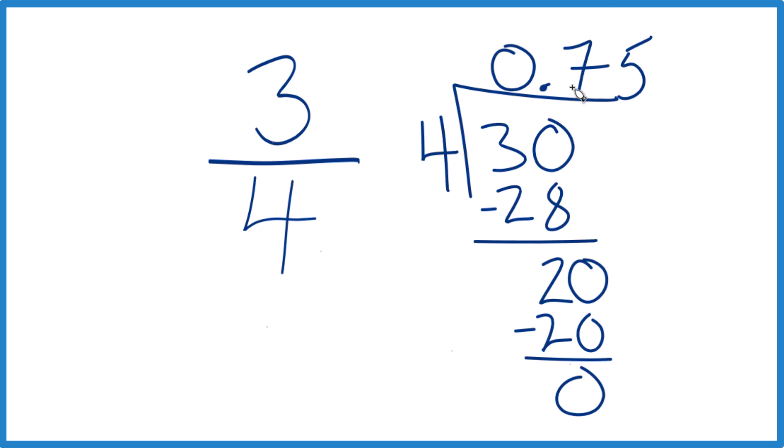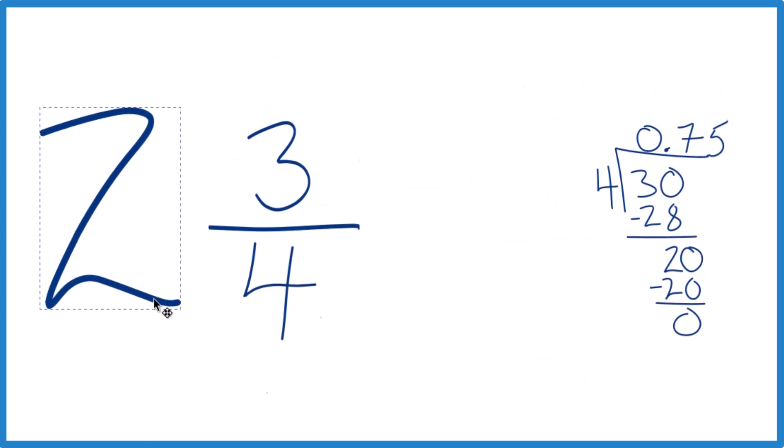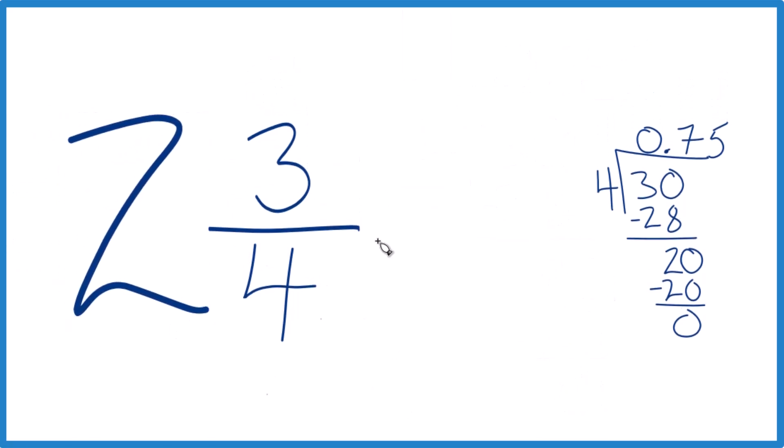So 3 fourths, that's equal to 0.75. Now let's put our 2 back. So we're going to say we have 2 and 3 fourths equals 2.75.